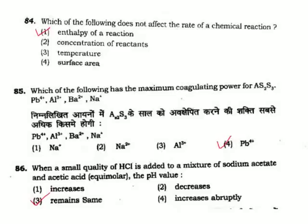Question 86: When a small quantity of HCl is added to a mixture of sodium acetate and acetic acid, the pH value will be — the mixture of sodium acetate and acetic acid is a buffer. When HCl is added to a buffer, the buffer's property is that adding any acid or base does not change the pH. So the pH remains the same. Correct answer is Option 3.